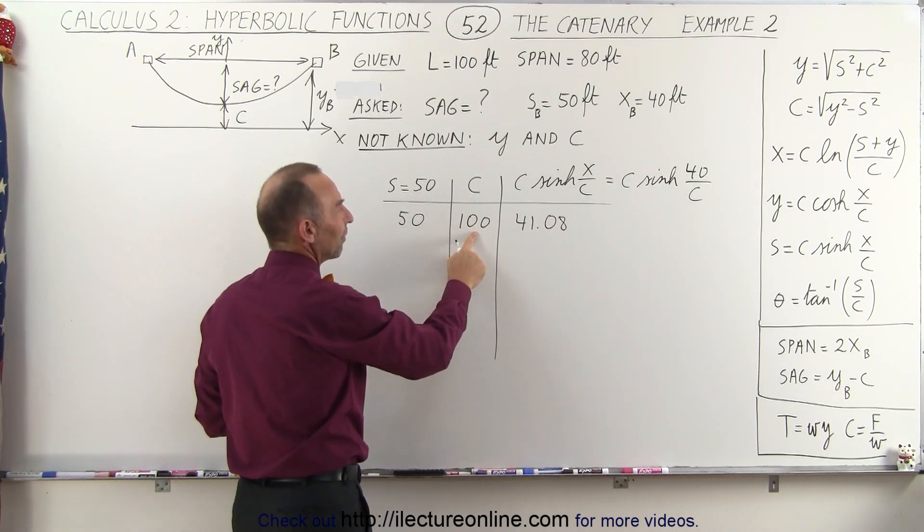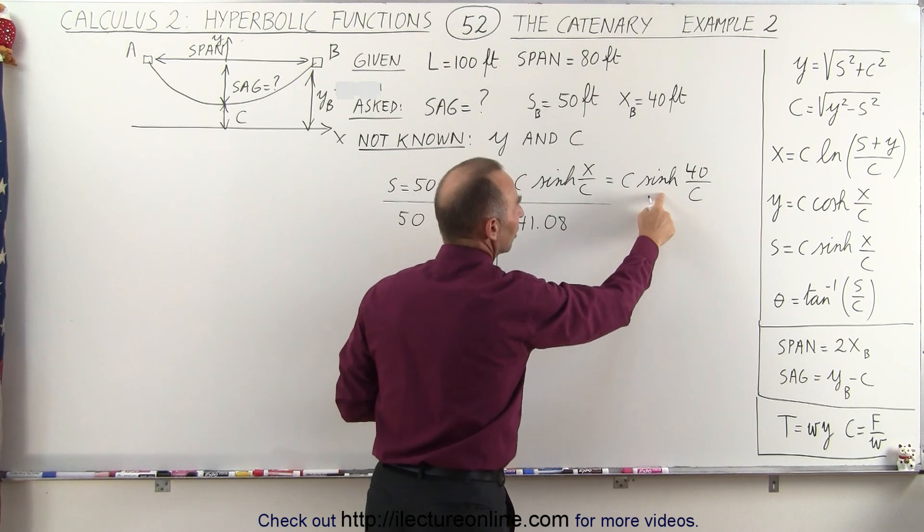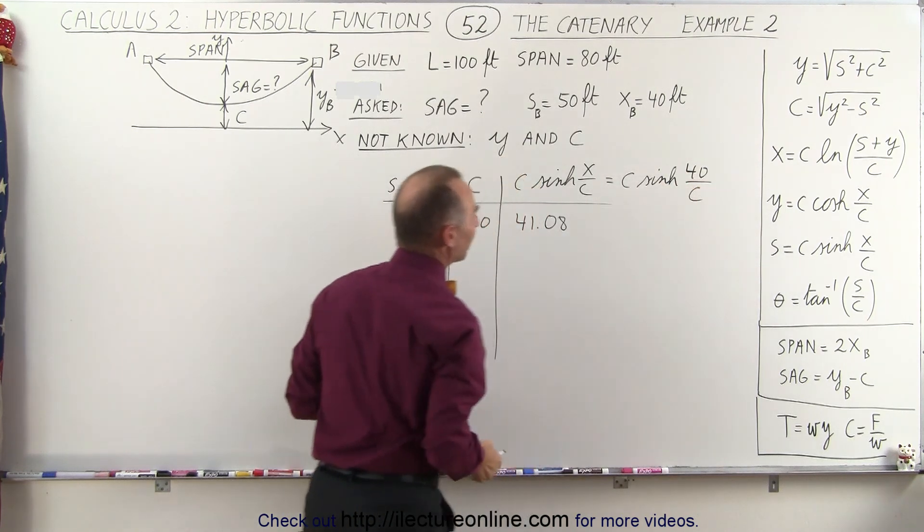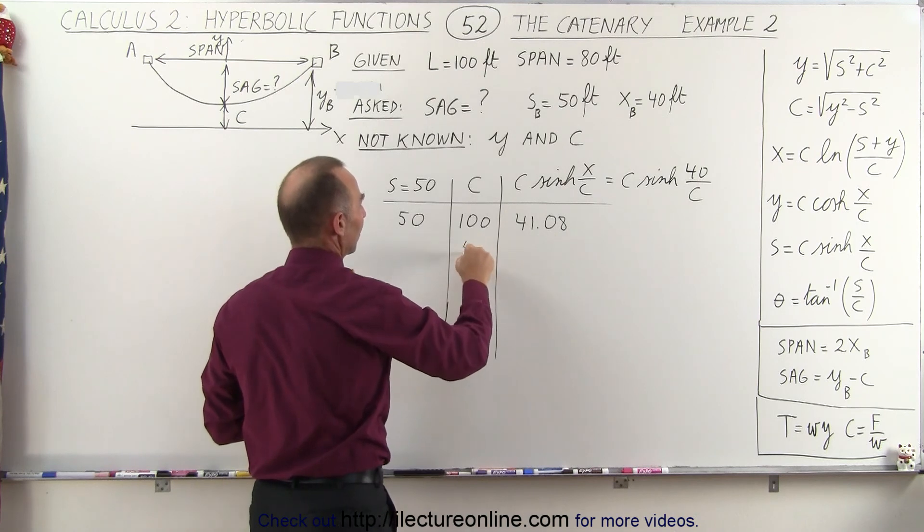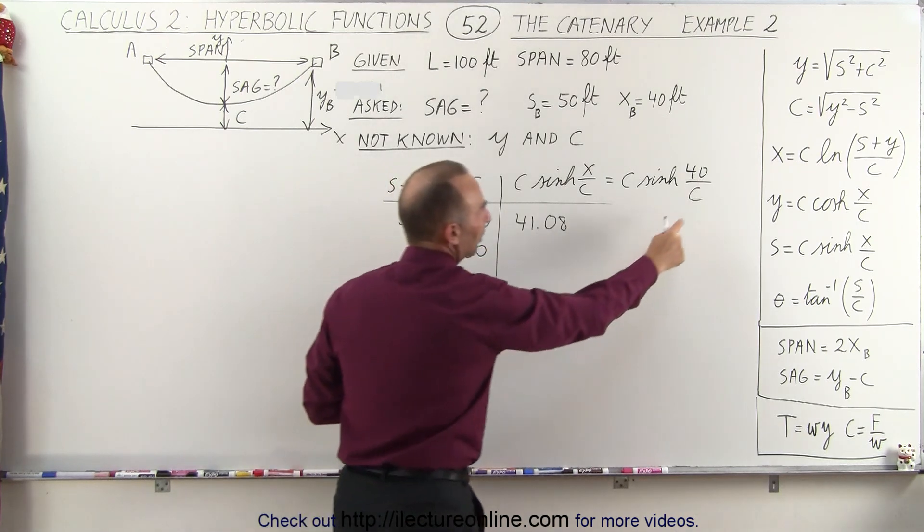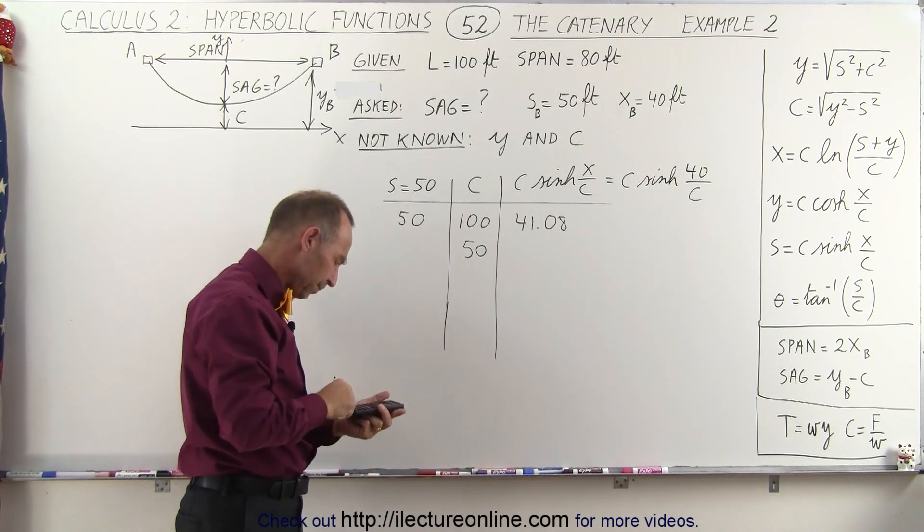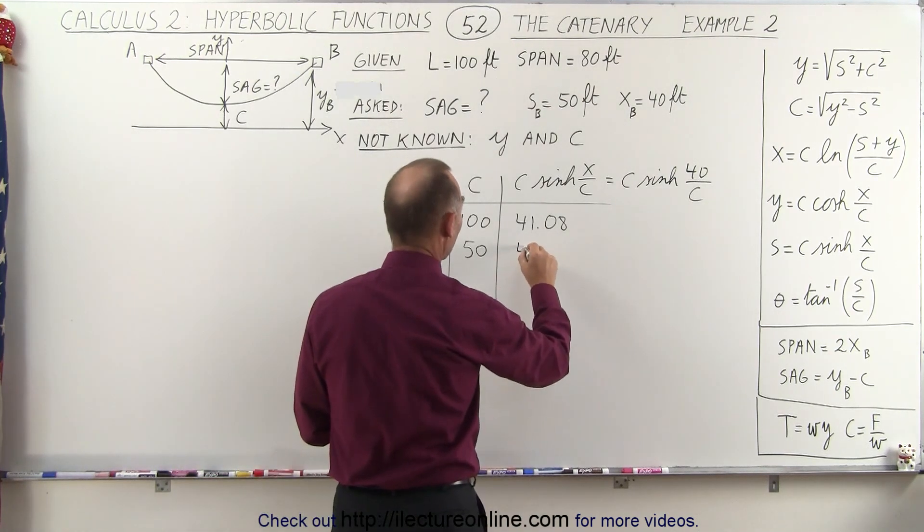We probably want to pick a smaller value because the hyperbolic function, the hyperbolic sine of a small number since c is big, is not a very big number. So let's try c equals 50 and see what happens. So now we'll put a 50 there and a 50 there and we get 44.4.